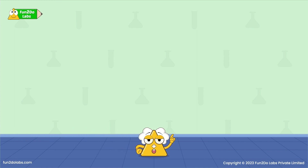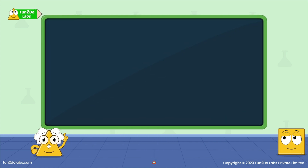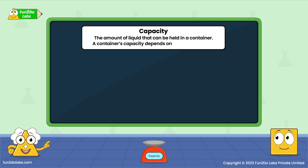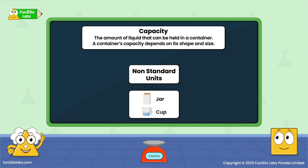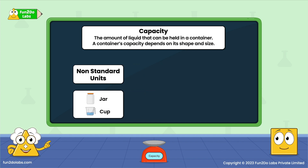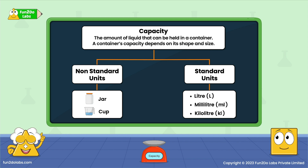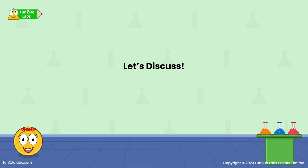Hello kids! Today we have learned about the measurement of capacity. Let's do a quick recap. Capacity is the amount of liquid that can be held in a container. A container's capacity depends on its shape and size. Capacity is measured in non-standard units like jars and cups, while we commonly measure capacity in standard units like liters, milliliters, and kiloliters. So quickly go and check the capacity of your water bottle. Isn't it so simple? No fear when I am here!